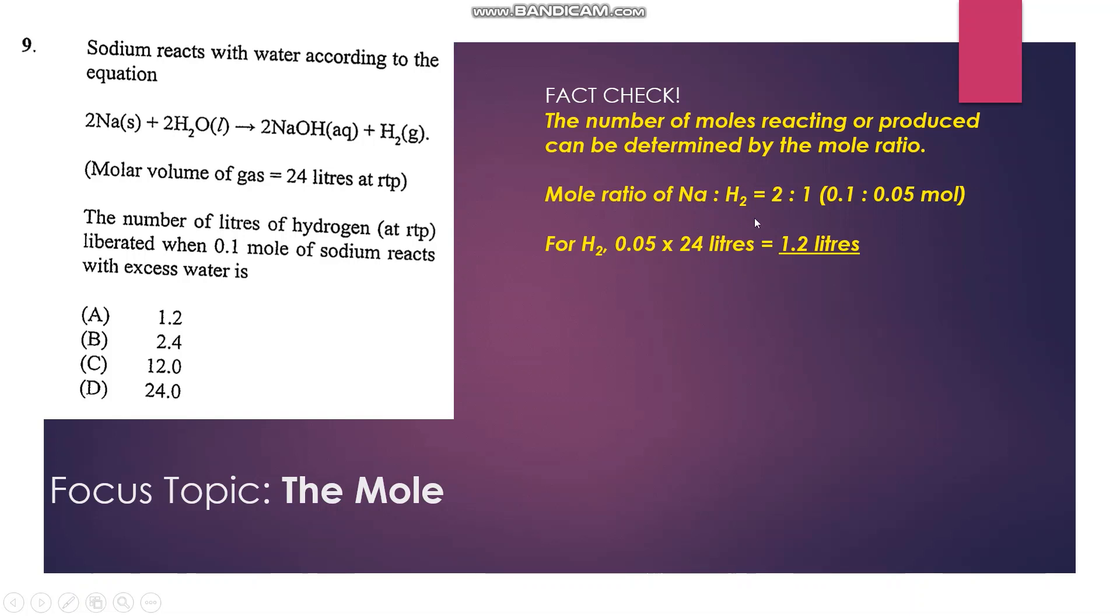So we have 0.05 moles of hydrogen gas would be obtained when 0.1 mole of sodium reacts. If 24 liters are obtained for 1 mole, then 0.05 times 24 would be obtained for 0.05 moles, and that's 1.2 liters. So the answer is A.